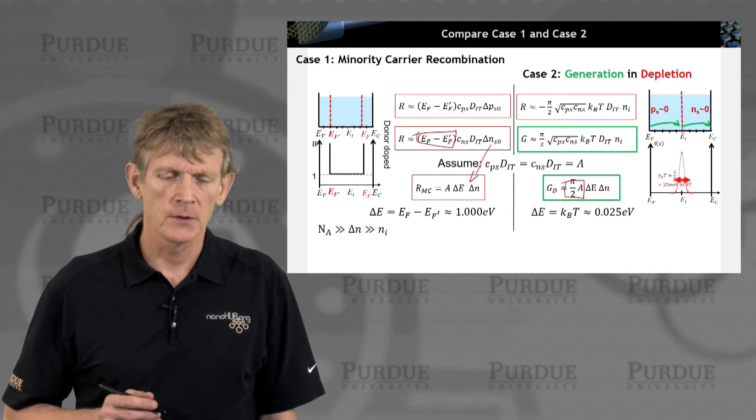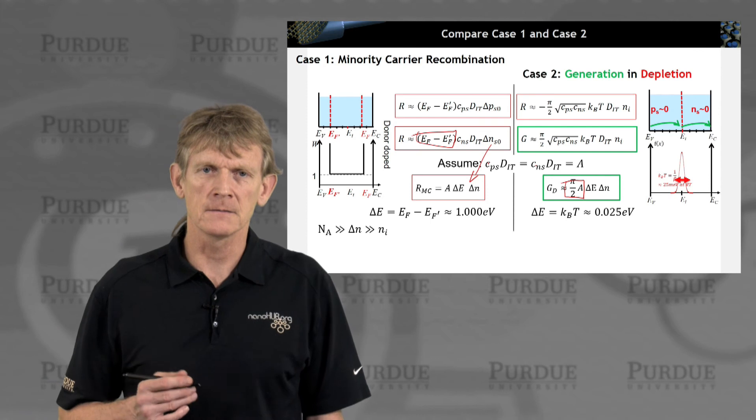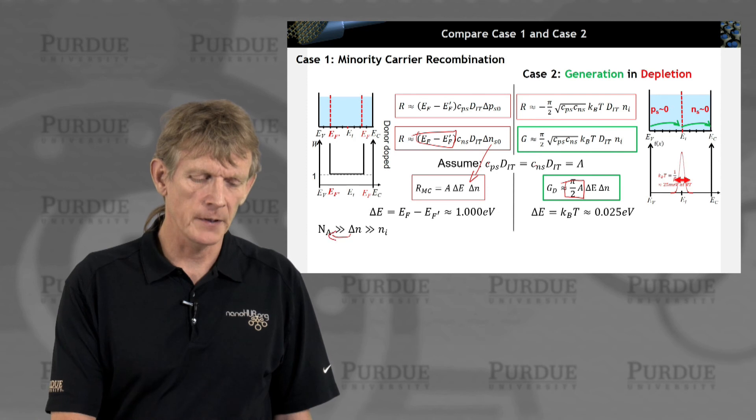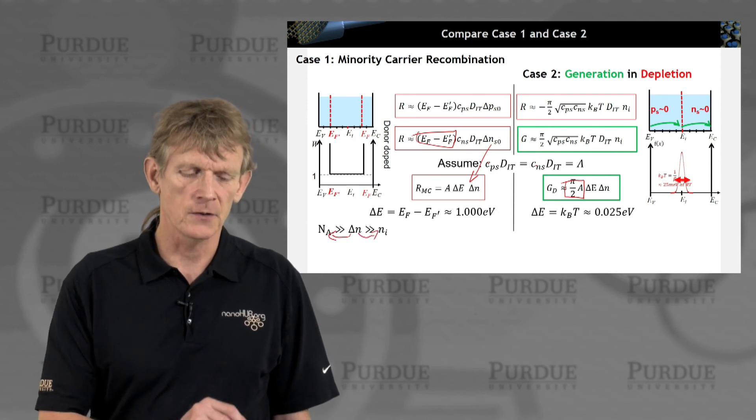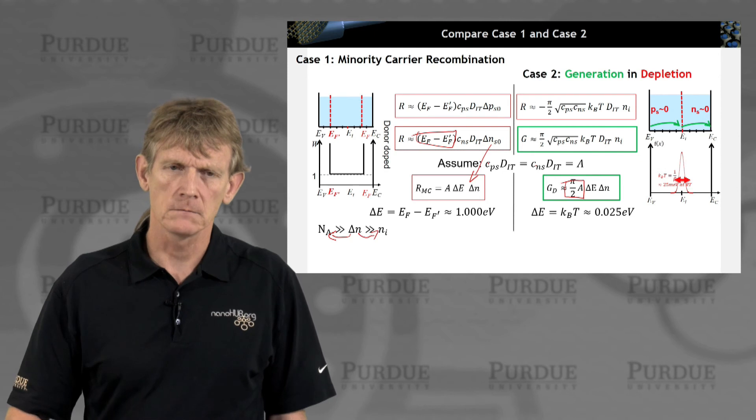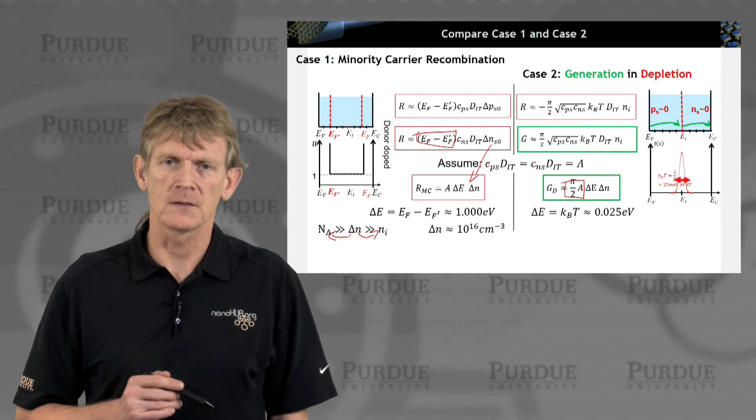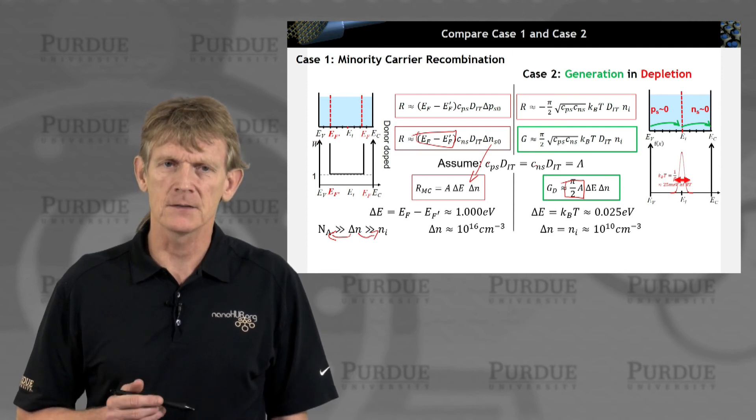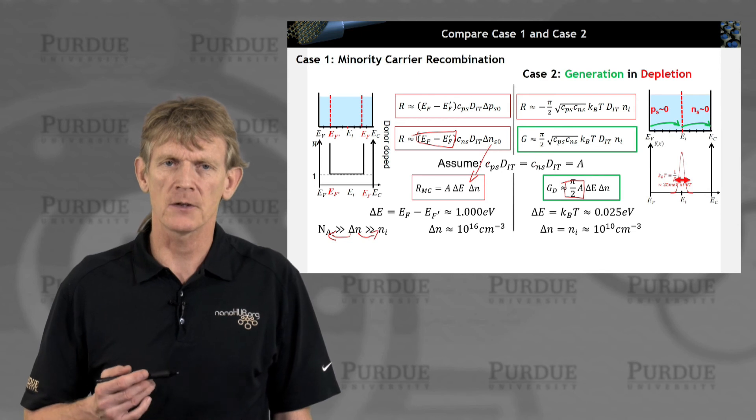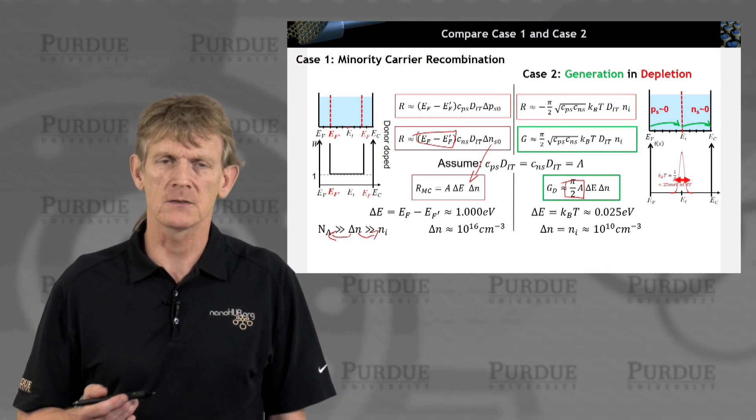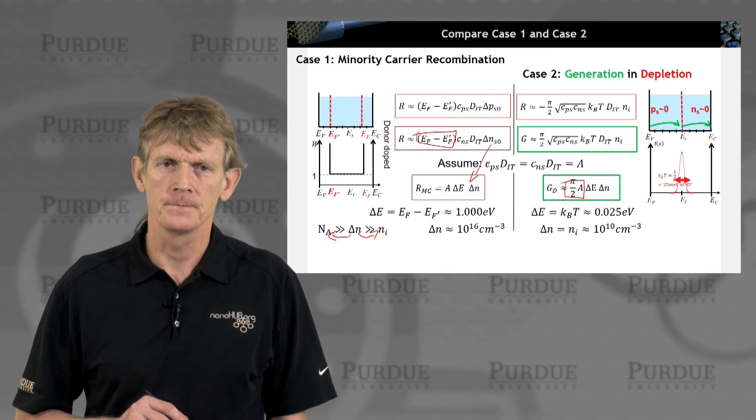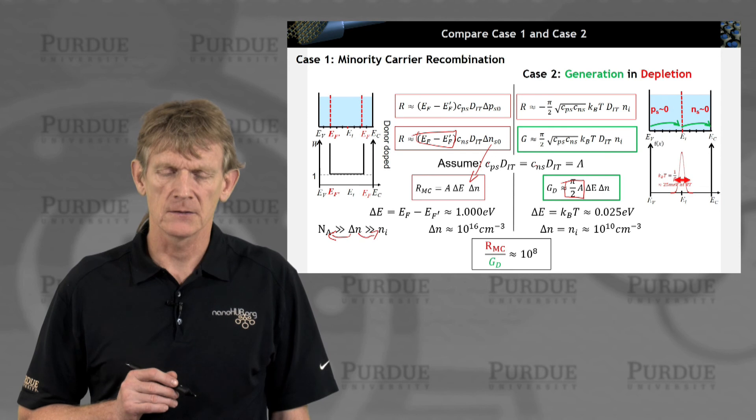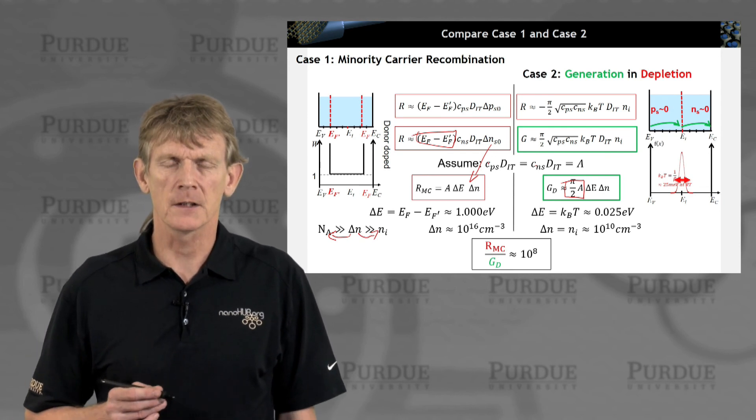Let's look at some of the carriers. We said we do low-level injection in this minority carrier recombination. Low-level means it's less than the doping, but larger than the intrinsic value. Let's pick 10 to the 16. Over here, it's the intrinsic value. That is the carrier concentration that is to be reestablished starting from 0. So, that's 10 to the 10. Let's compare these rates. 10 to the 8.